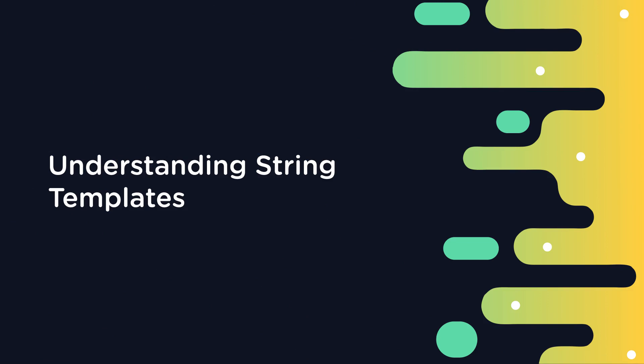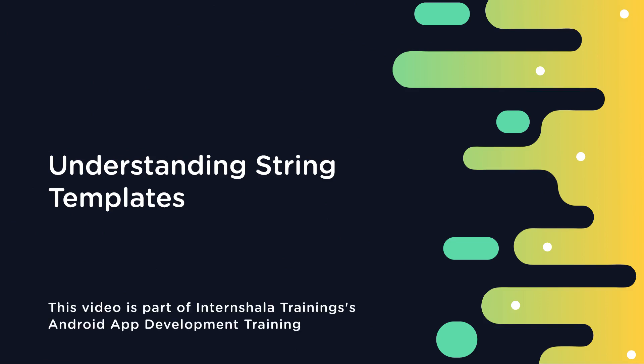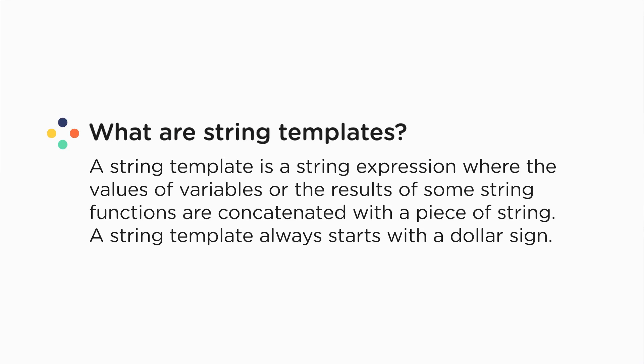Hi guys, in the previous video, we learnt about strings and string functions in Kotlin. Now let us understand what string templates are. A string template is a string expression where the values of variables or the results of some string functions are concatenated with a piece of string. A string template always starts with a dollar sign. It can be used to combine the two print statements that we had used in the previous video into one. Let's try and do this ourselves so that you understand the definition more clearly.